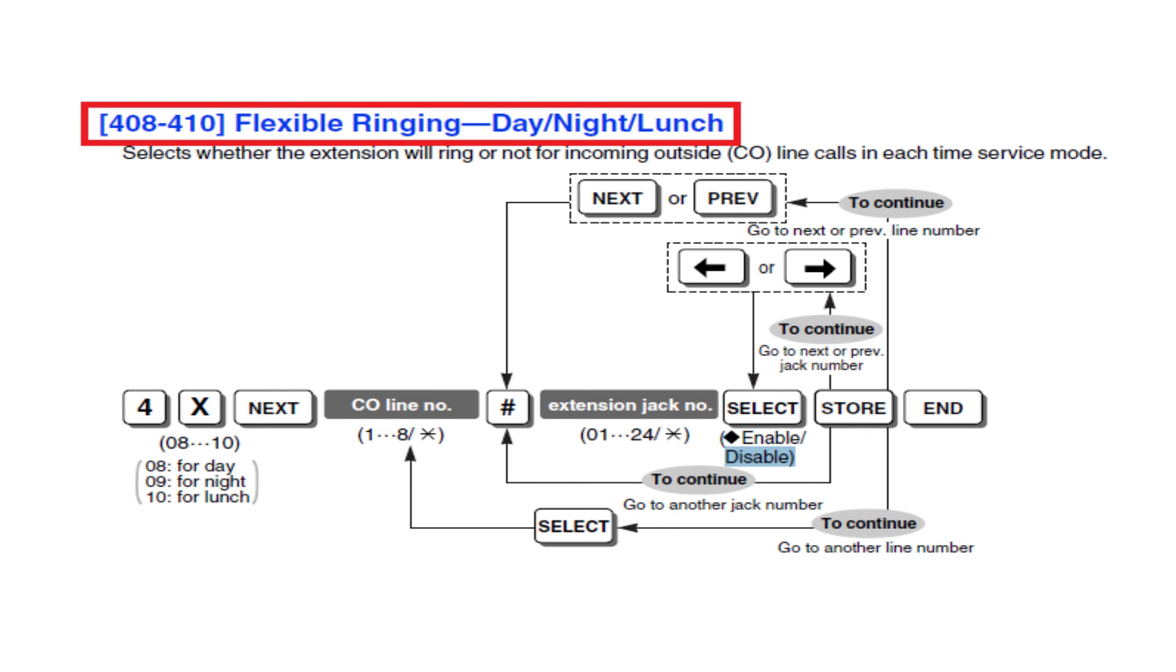Similarly we can set up incoming call restriction by using 408, 409, 410 like day, night and lunch respectively. If you need to allow only 101 extension for incoming call for CO1 then go to programming mode. After press program number 408 then select the CO in which you need to block incoming call. After that you can select the extension jack from the program and enable 01 for incoming. Then store it. The same you can repeat for 409 and 410 to make effective in night and lunchtime as well.